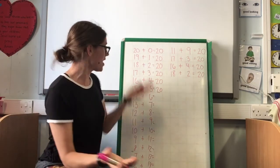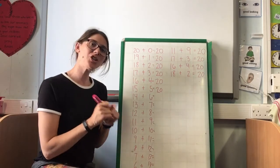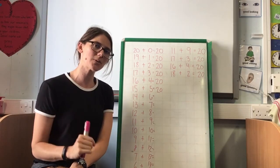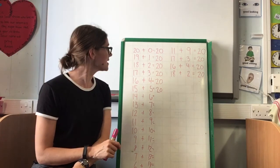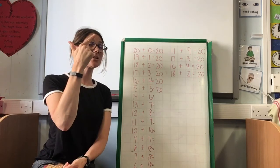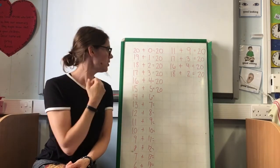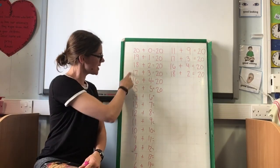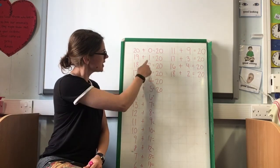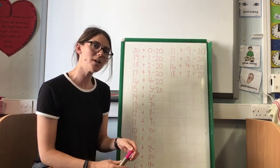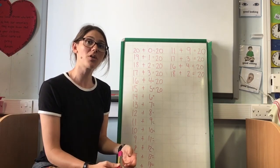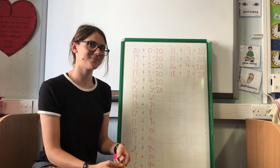And so that is how we can work systematically to make sure we get all of our number bonds to 20. I've run out of space, so I haven't been able to do them all. Can you work systematically to write down all of your number bonds to 20? You can use the technique of counting on — 18, 19, 20, that's 18 plus 2 — or you can use the technique of working systematically, counting backwards and counting forwards to find all the number bonds. Can you work out how many number bonds there are to 20?